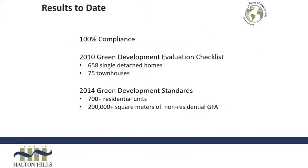Through this process, we allocate development conditions associated with conforming with the green development standards as they've committed to in the checklist. They then move into the construction phase and build out to what they've agreed in the standards. Through this metric, we achieve 100% compliance to the green development standards — every new development has to complete a checklist. Throughout the entire period that we've been doing this, upwards of 1,400 residential units have been built to the standards, and quite a bit of non-residential gross floor space has been built according to this standard as well — so it covers not just homes but businesses too.